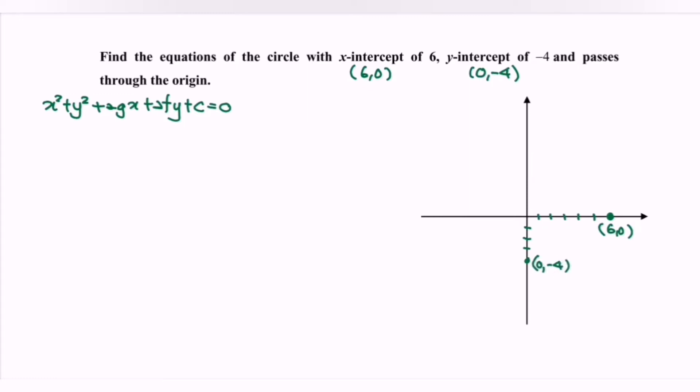And the circle passes through the origin. So where is the origin? The origin is (0, 0).